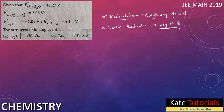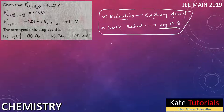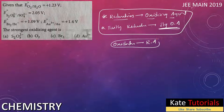The metal which undergoes reduction acts as an oxidizing agent — that point you have to remember. Similarly, vice versa: if any element is undergoing oxidation, it acts as a reducing agent. If you know this fact, you can easily solve the problem.